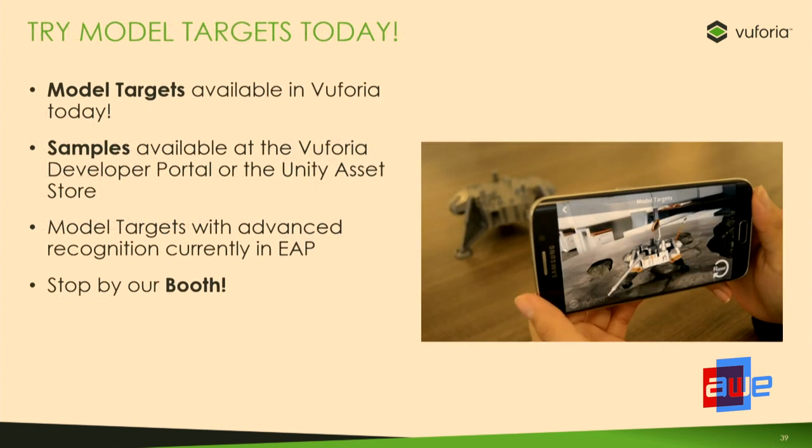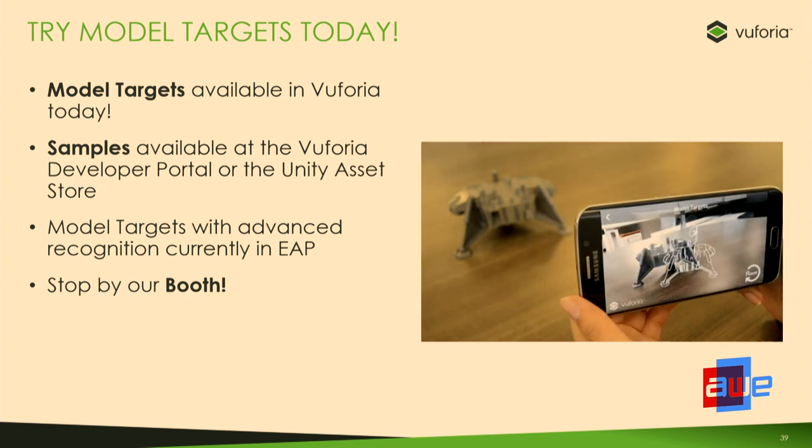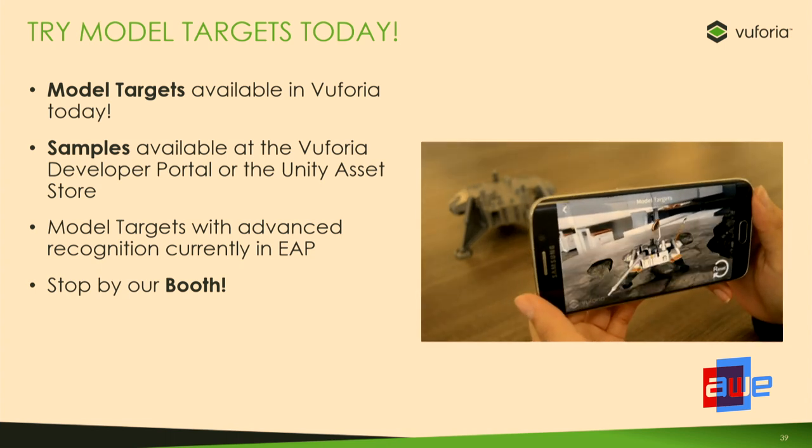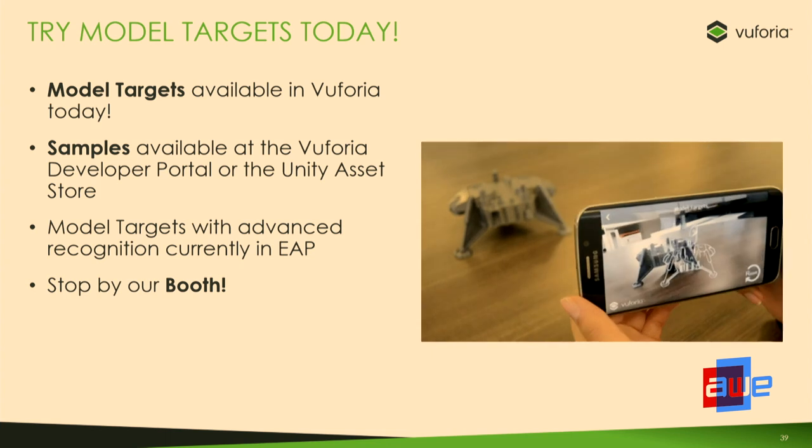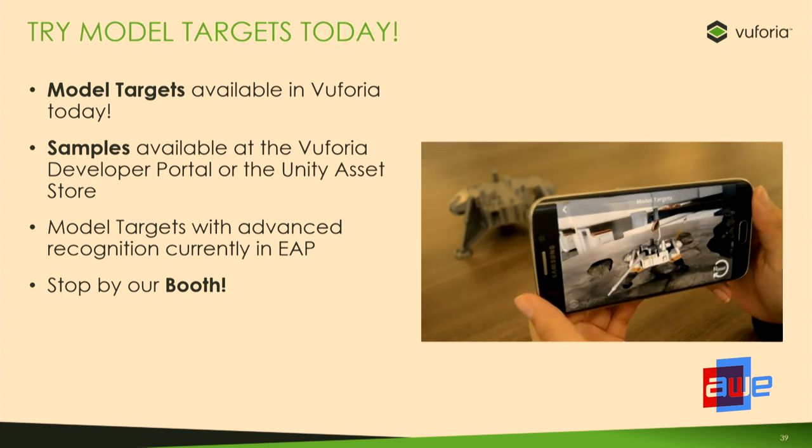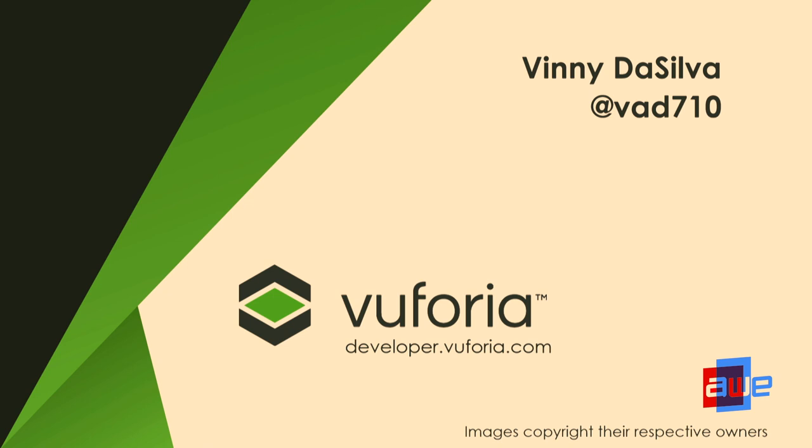Model targets is available today in the current version of Euphoria 7.5. You can download it — it's integrated into Unity — or download it from our website. We also have a ton of samples for developers on our website and in the Unity Asset Store. If you're itching to use functionality we're working on that's not publicly released yet, you can join our Innovator program — stop by our booth or visit our website for more information. That's all I have for you guys. Thank you so much.